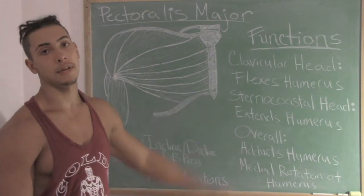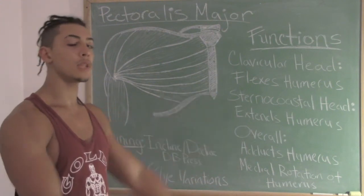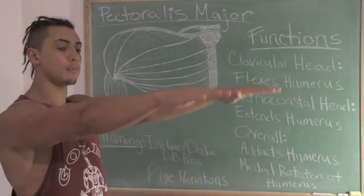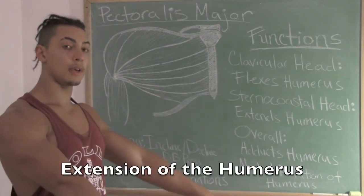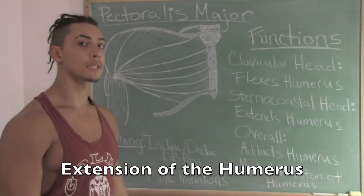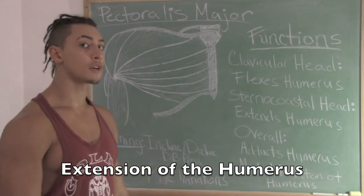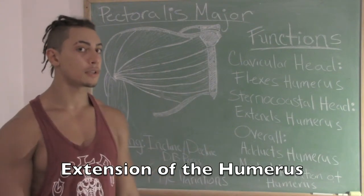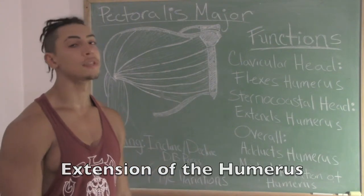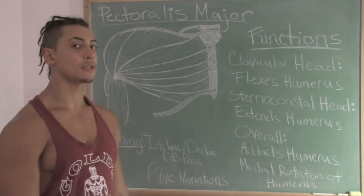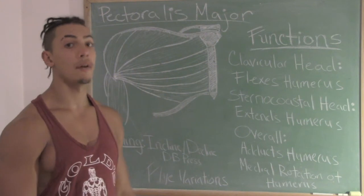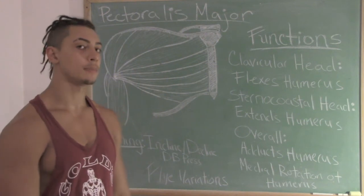Looking at the sternocostal head: if you put your arms out and bring them down, this is humeral extension. This is the specialized function of the sternocostal head of the pectoralis major.